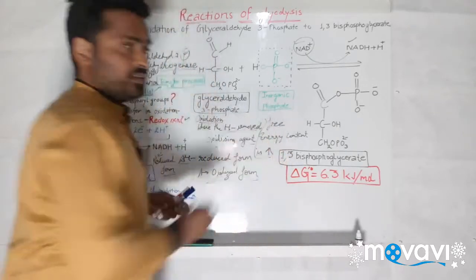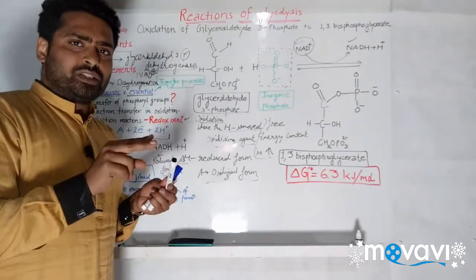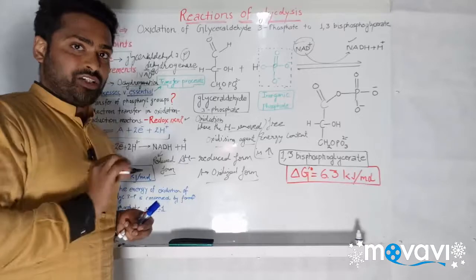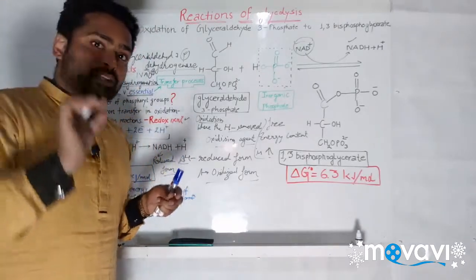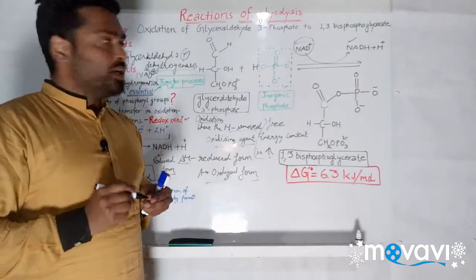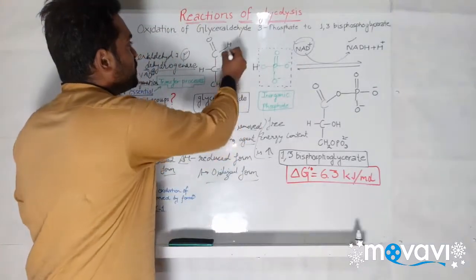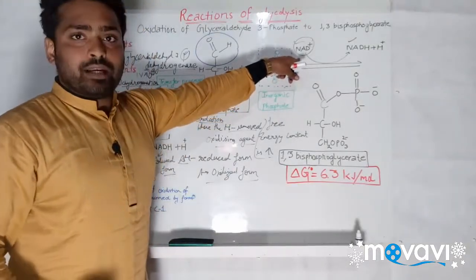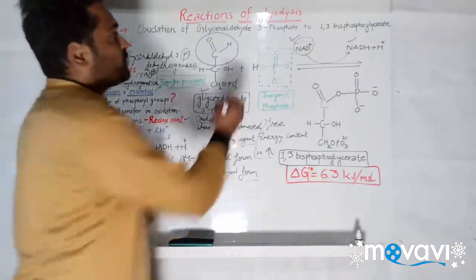This is the first of two reactions which are energy conservative — energy is conserved in this reaction. We are going to conserve the energy through transfer of the phosphoryl group, and we will use that energy in the formation of ATP in the next reaction. What we are doing here is oxidizing the glyceraldehyde 3-phosphate with the oxidizing agent NAD⁺, and simultaneously we are also phosphorylating it.